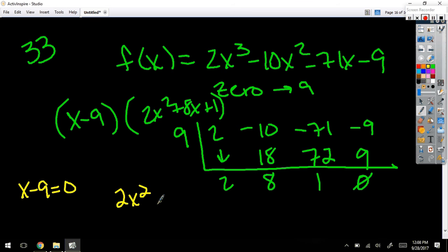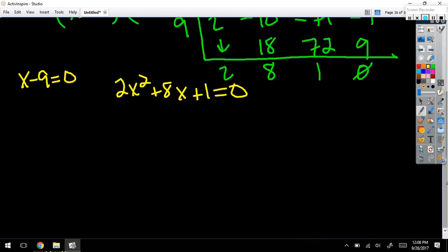If I have a quadratic equal to zero that is not factorable, I can complete the square, but if I complete the square I got to divide everything by 2 and wind up with a fraction. So instead I'm going to say: -b ± √(b² - 4ac) all over 2a.